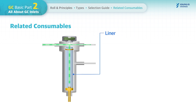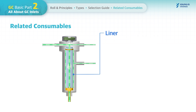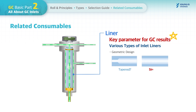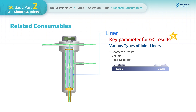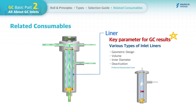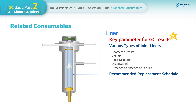A GC inlet liner is located at the entrance of the GC column inside the GC inlet. This is where liquid samples get volatilized and it transfers the injected sample into the GC column while preventing sample residue and non-volatile contaminants from reaching the column. Selecting the right inlet liner directly affects analysis results. There are various types of inlet liners differentiated by geometric design, volume, inner diameter, deactivation, and the presence or absence of packing. The inlet liner should be inspected daily and replaced every month or when any related symptoms occur.